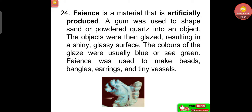Faience is a material that is artificially produced. A gum was used to shape sand or powdered quartz into an object, which was then glazed, resulting in a shiny, glassy surface. The colors of the glaze were usually blue or sea green. Faience was used to make beads, bangles, earrings and tiny vessels.